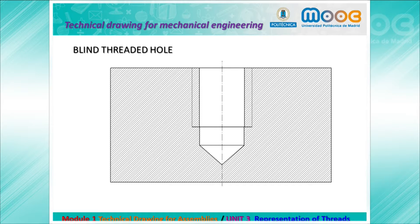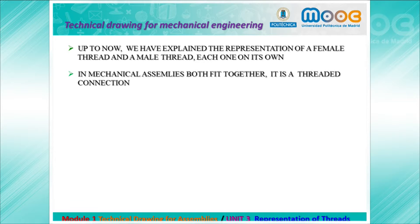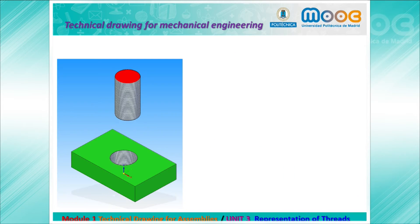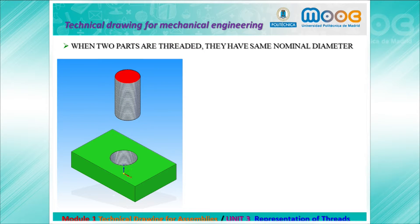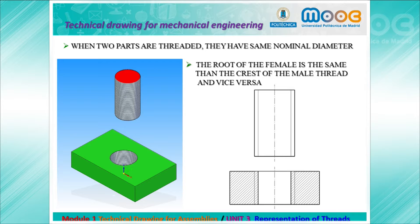Here we have a blind threaded hole, which is a female thread. In mechanical assemblies both threads fit together, forming a threaded connection, as we can see with the screw and nut. The two parts must have the same nominal diameter if they are going to be threaded together, so the root of the female is the same as the crest of the male, and vice versa.